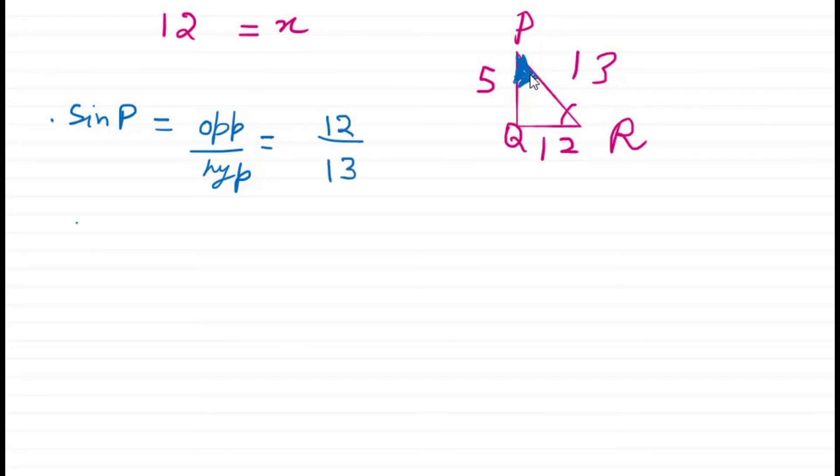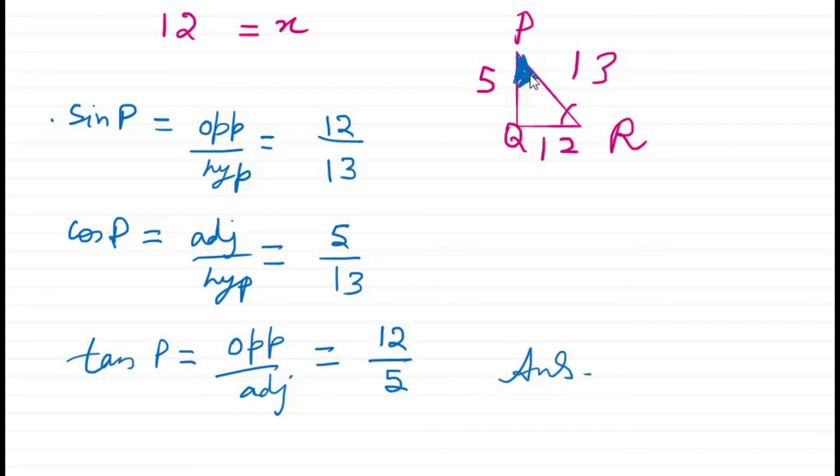For tan P, the formula is opposite side divided by adjacent side. The opposite side is 12 and the adjacent side is 5, so it's 12/5. This is the answer for this question. I hope this is clear.